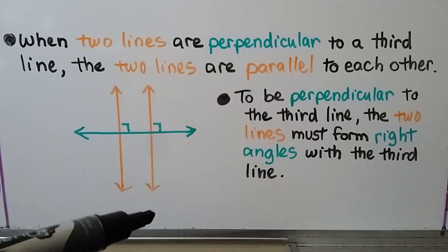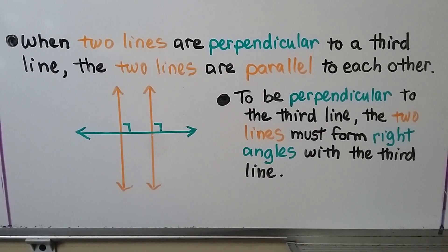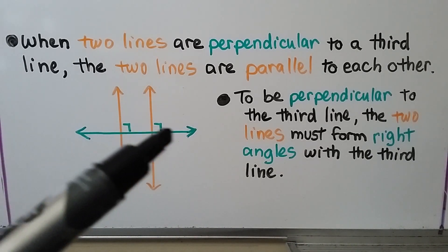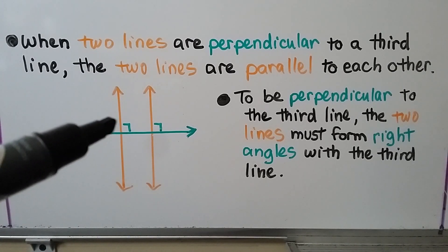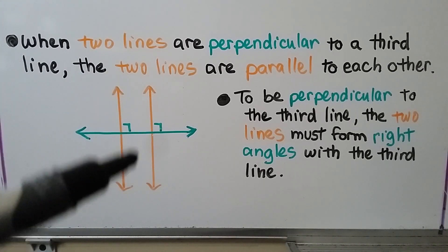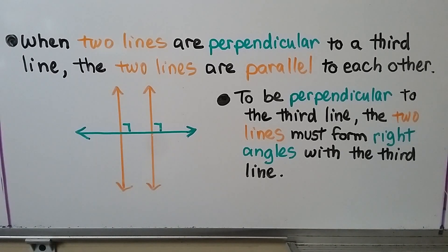When two lines are perpendicular to a third line, the two lines are parallel to each other. If they're perpendicular to this green line, they must be making right angles, which means they're both going in the same direction and the same distance from each other. To be perpendicular to the third line, the two lines must form right angles with that third line.